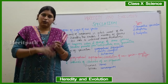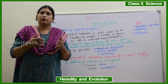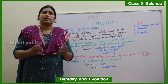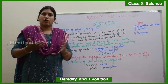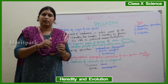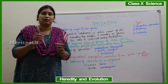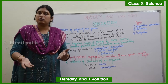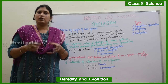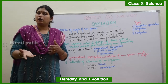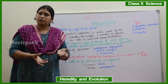When we cross a donkey with a horse, we get a mule. But a mule is not fertile. Similarly, when a male lion is crossed with a female tiger, we get a liger — a new organism — but it is not fertile and cannot produce babies. Mule also cannot reproduce and doesn't have any specific number of chromosomes or a specific DNA structure.